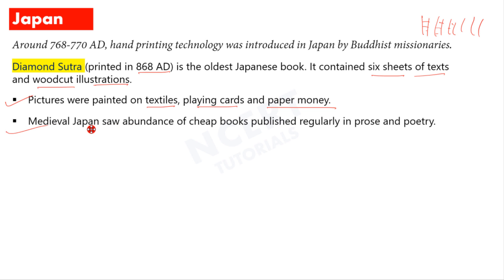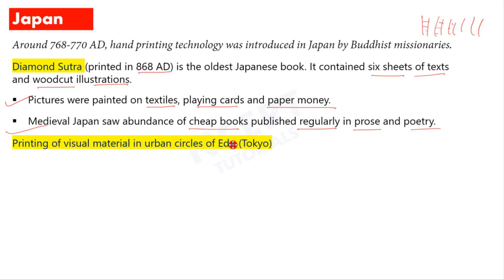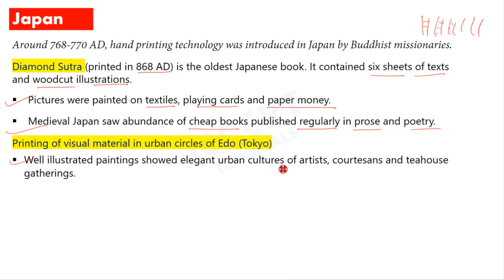In medieval Japan, cheap books were abundantly available — quite a large number of books were accessible, selling cheaply and being printed continuously in both prose and poetry, because there was demand and people read them. Just as urban lifestyle had bloomed in China and impacted print technology, similarly in Japan, visual material was printed in urban circles of Edo — the old name of Tokyo. Well-illustrated paintings depicted the elegance and charm of urban culture, featuring artists and courtesans.